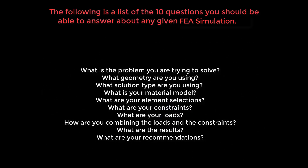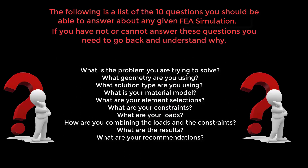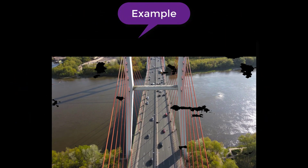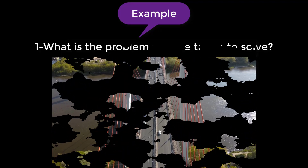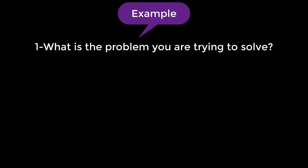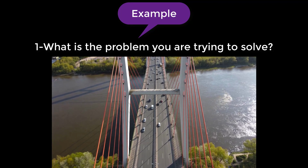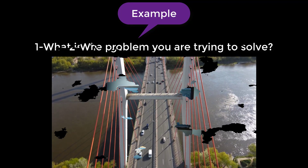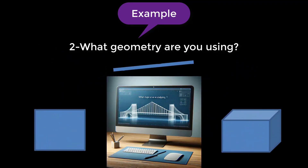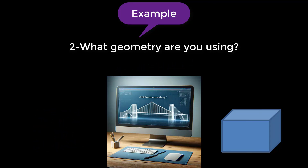Here is a list of the 10 questions you should be able to answer about any given FEA simulation. If you cannot answer these questions, you need to go back and understand why. Using a bridge analysis as an example: What is the problem you are trying to solve? — We are analyzing the structural integrity of a bridge under varying traffic loads to ensure its safety. What geometry are you using? — We are using a 3D model of a suspension bridge with accurate representations of its towers, cables, and deck.